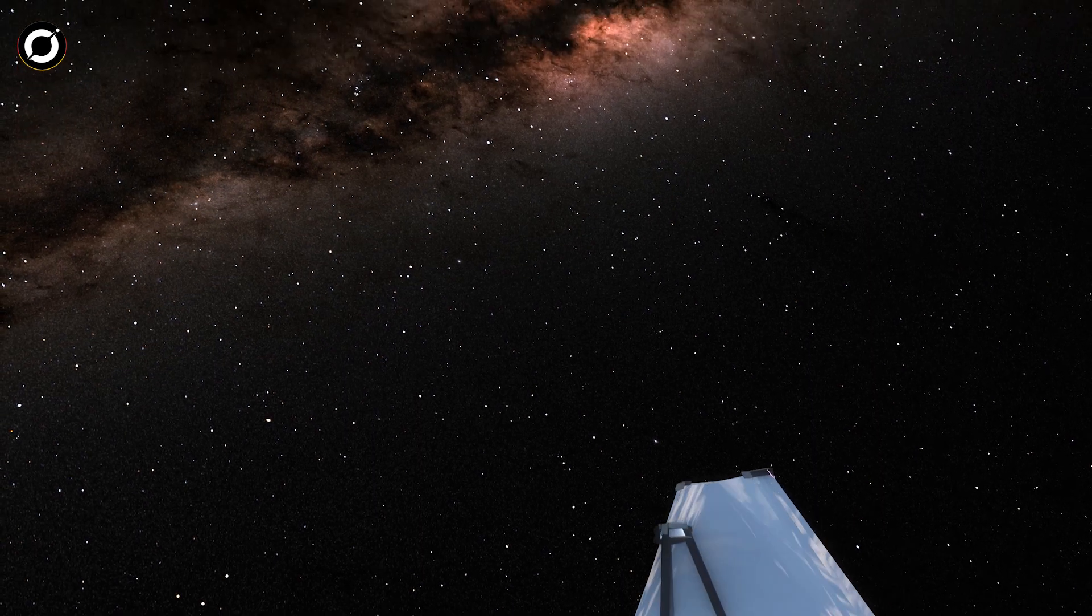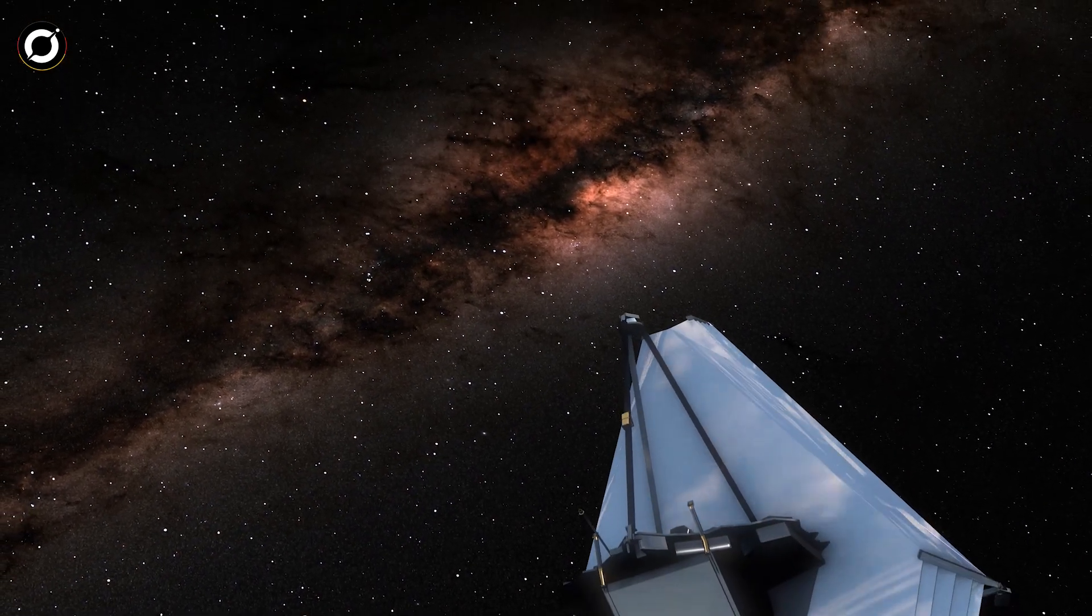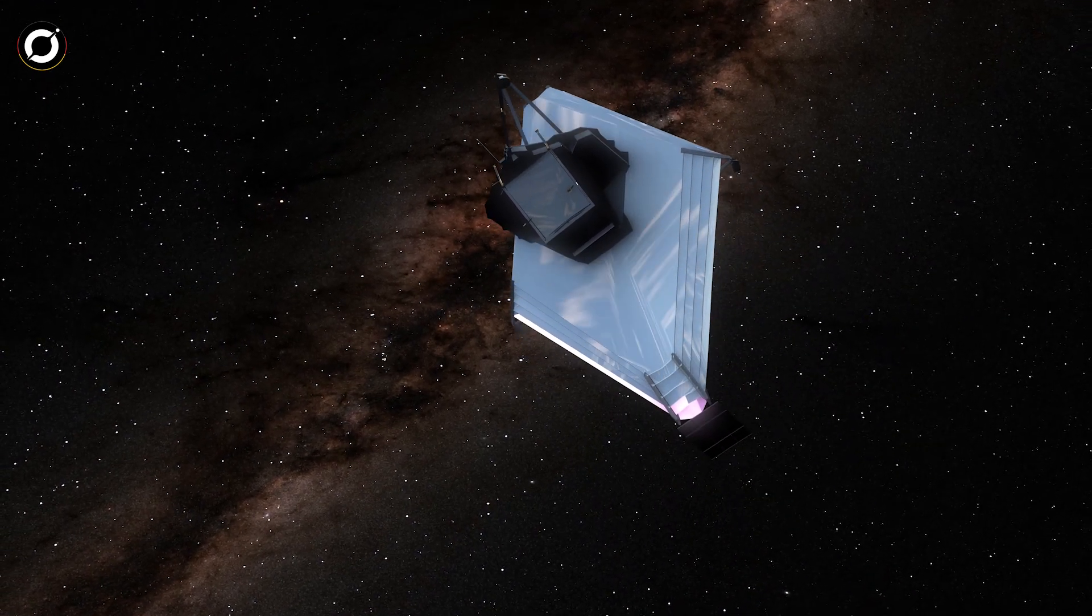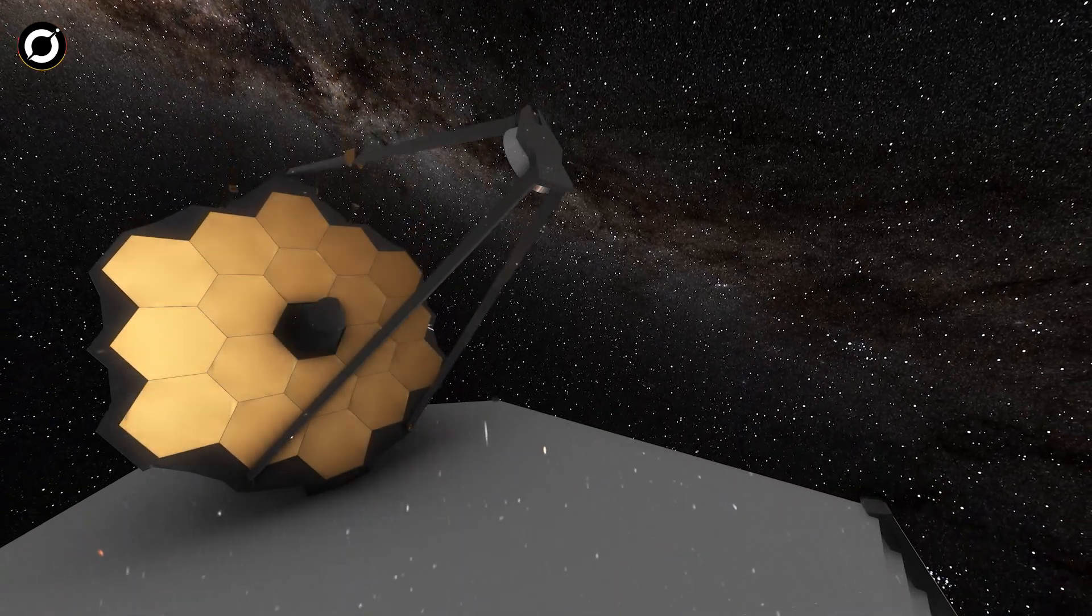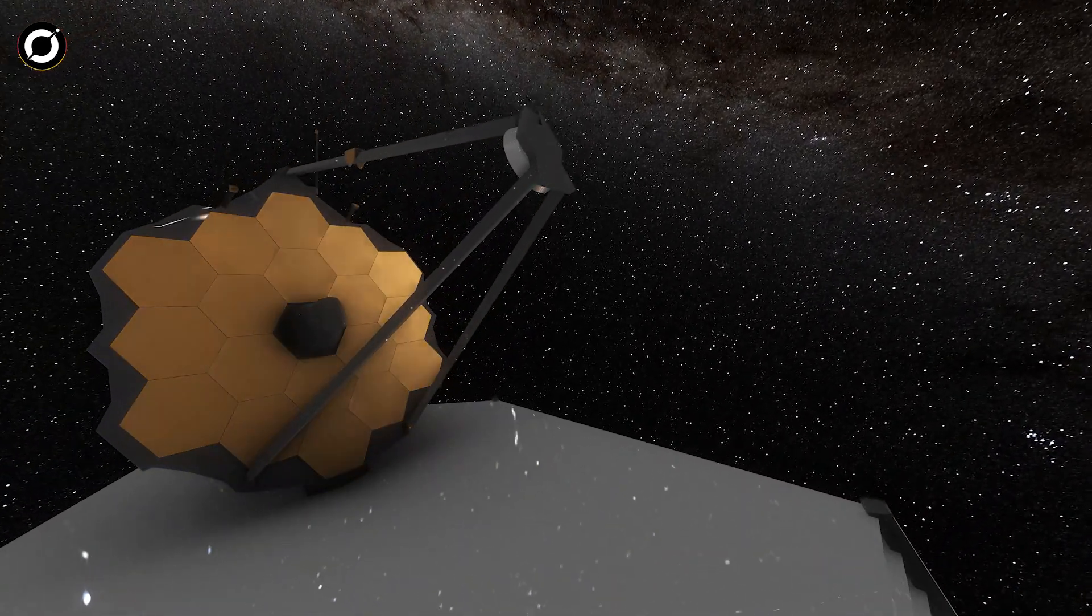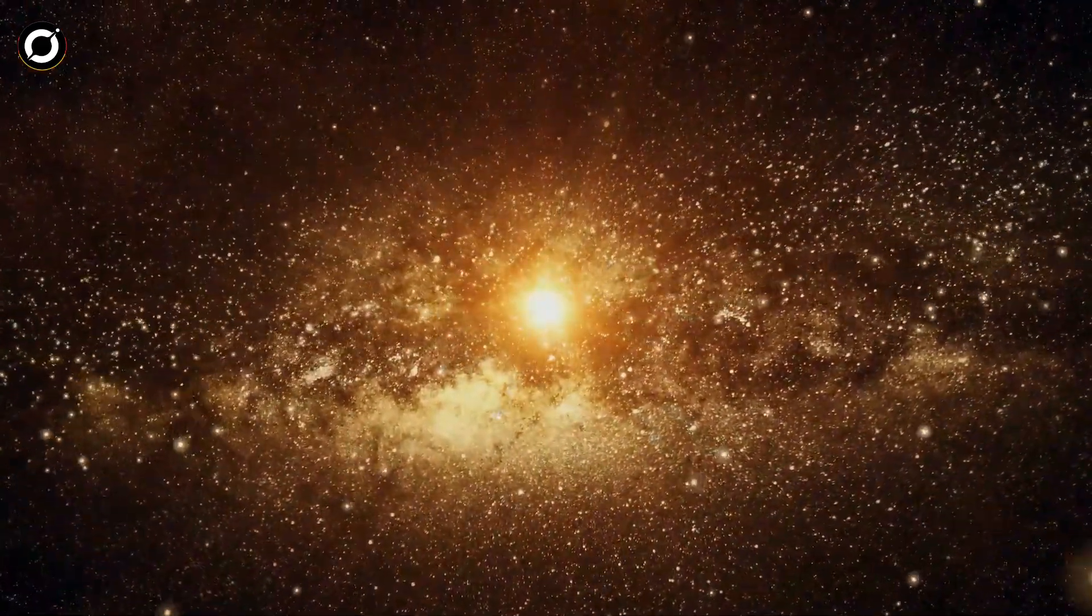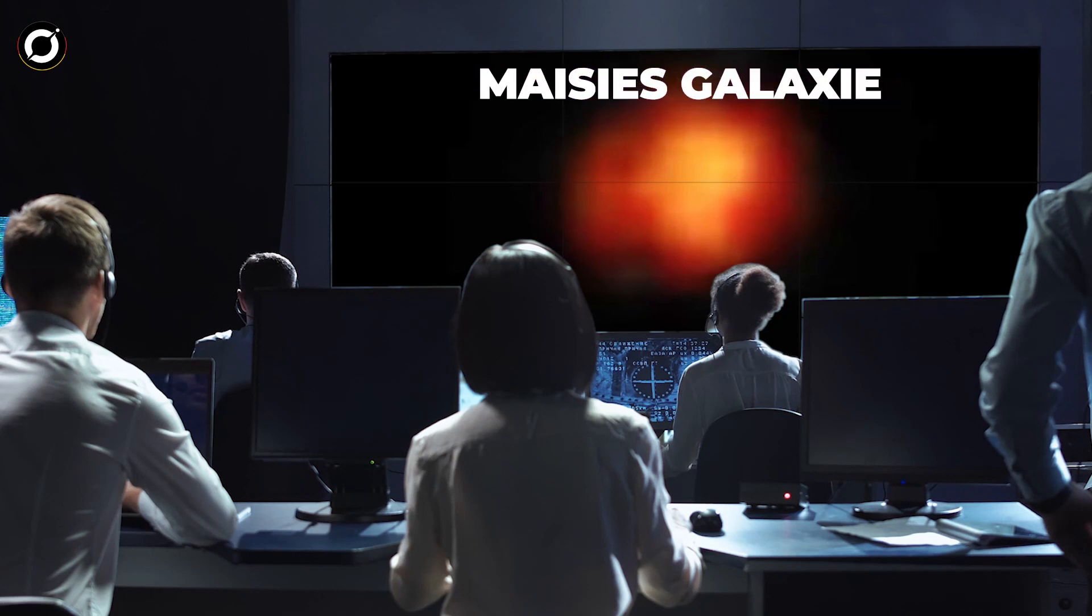Das James Webb Teleskop wurde ins Leben gerufen, um einen Blick zurück in die Anfänge der Zeit zu werfen und Bilder von den allerersten Sternen zu machen, die im Weltraum leuchteten. Bei seiner jüngsten Entdeckung hat das Teleskop eine der ältesten Galaxien im Universum entdeckt. Dieser rote Fleck im Hintergrund eines tiefen Bildes des Weltraums wurde als eine der frühesten bekannten Galaxien bestätigt. Sie entstand nur 390 Millionen Jahre nach dem Urknall und wurde Maisys Galaxie genannt, nach der Tochter des Astronomen, der sie an ihrem Geburtstag zum ersten Mal sah.